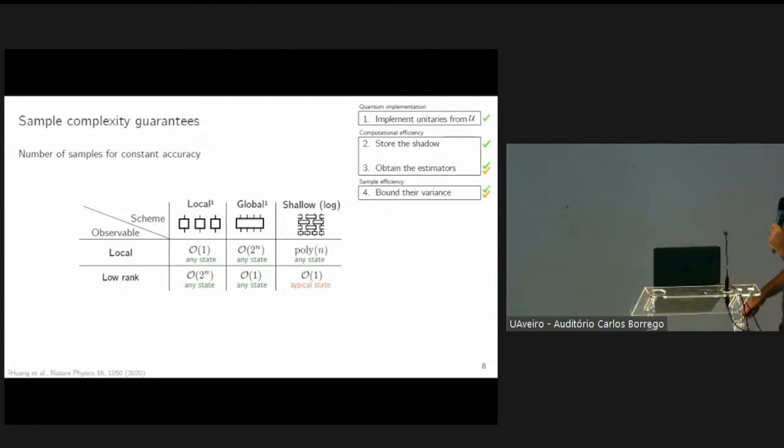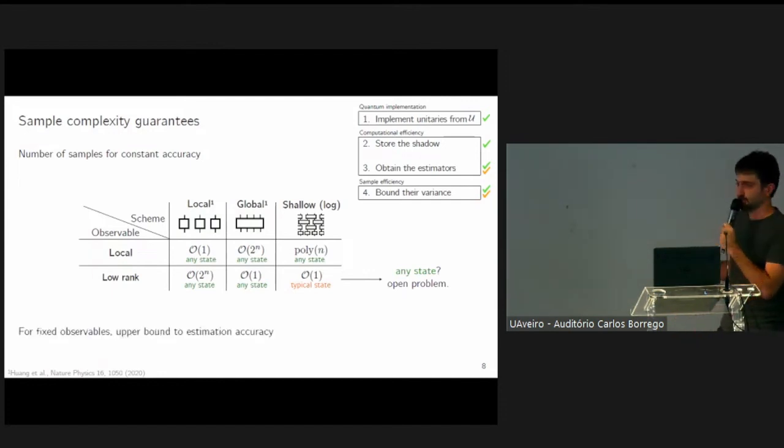While in our case, we show the aforementioned middle ground property, where local observables are still efficient, only requiring a polynomial number of samples, while for low rank observables, we show that only a constant number of samples are required, but this we show only for a typical state, meaning on average for some reasonable ensemble of initial states. Whether or not this holds for just any state is an open problem. Of course, we also provide ways to upper bound this error given some fixed observable. You might still be interested in knowing how large this error is, and we provide upper bounds to the variance.